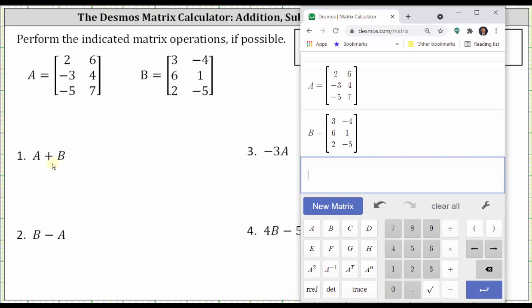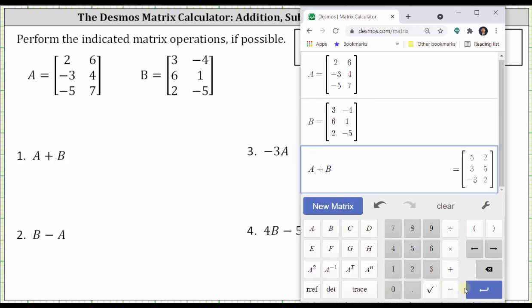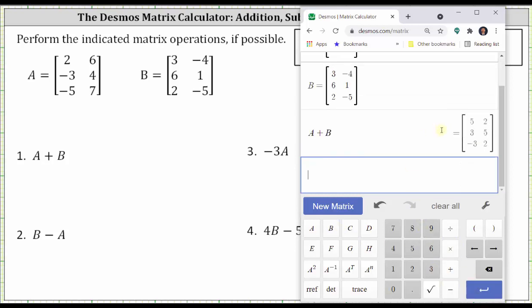And now to find matrix A plus matrix B, simply enter A plus B, enter, and we have the sum of the two matrices.